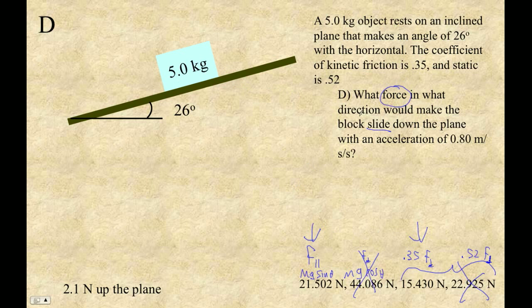It's sliding down the plane. If it's sliding down the plane, the friction force will be up the plane. So positive 15.430 newtons acting up the plane. The parallel force is always down the plane. It's very predictable. So negative 21.502 newtons, always down the plane. That's our force parallel. This is our friction force.